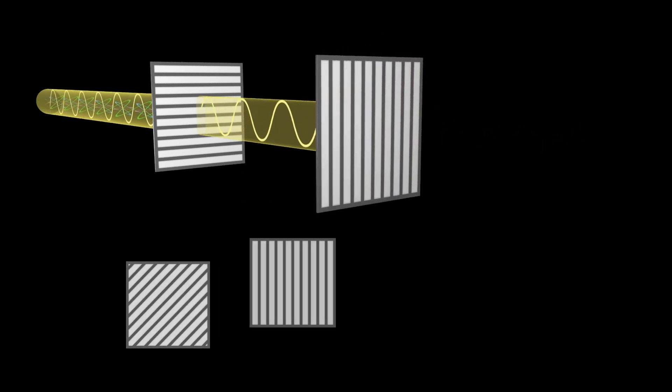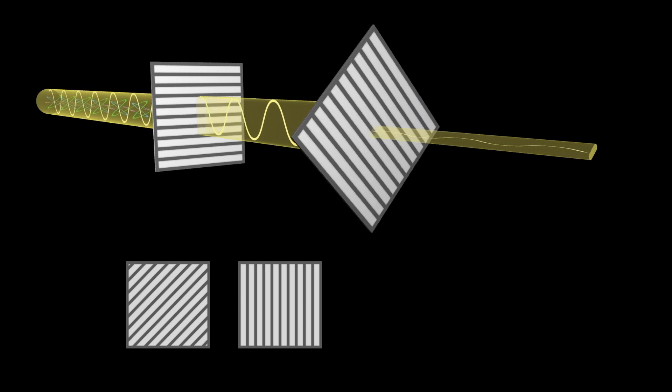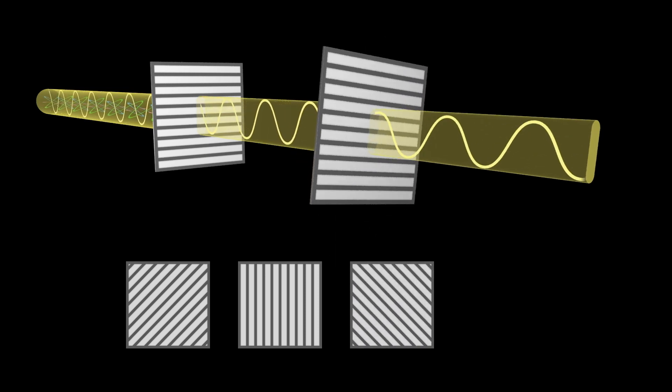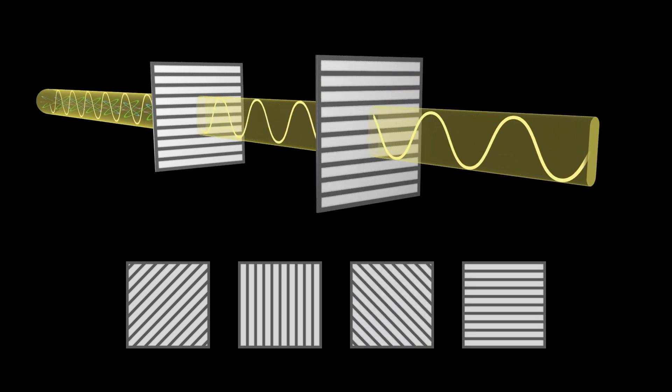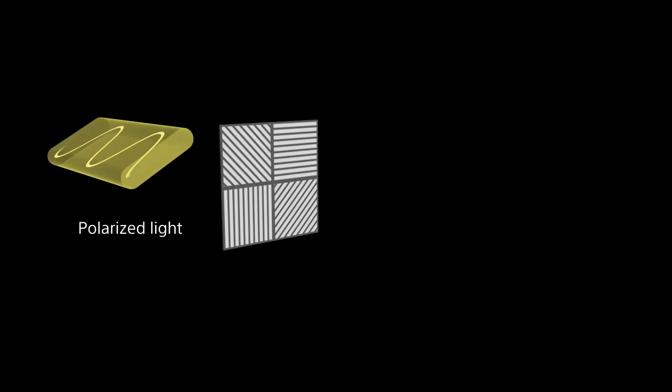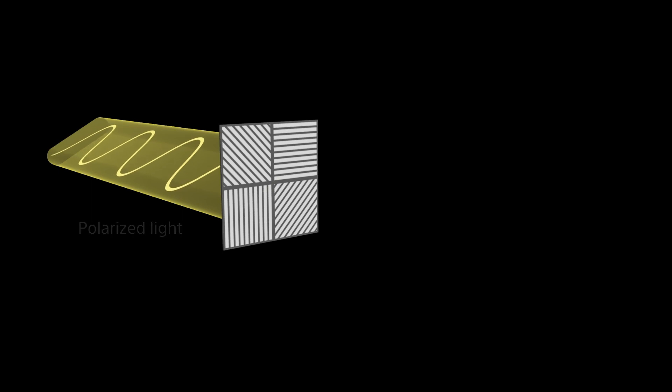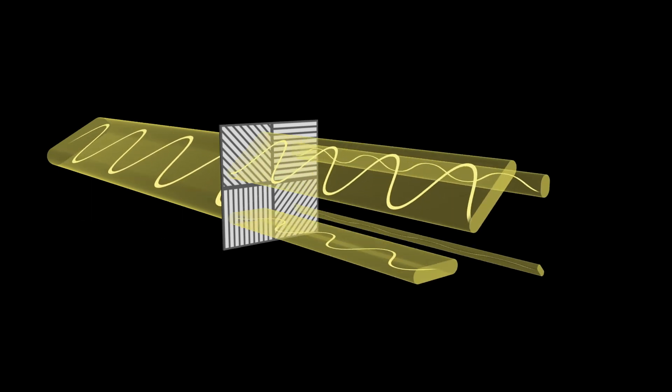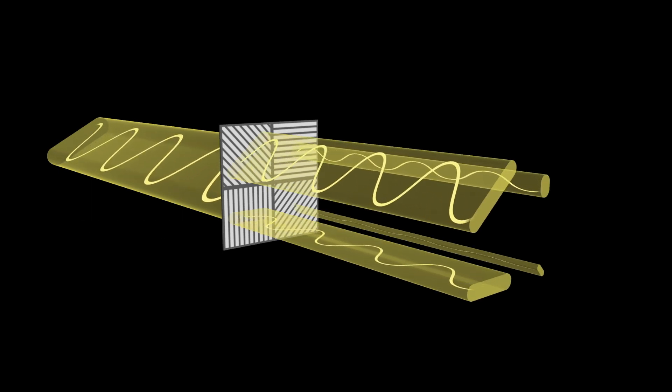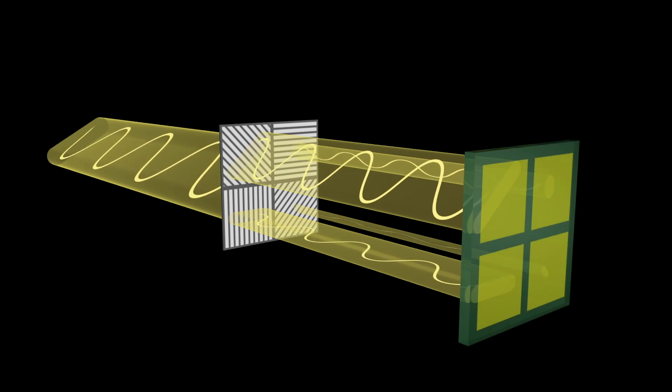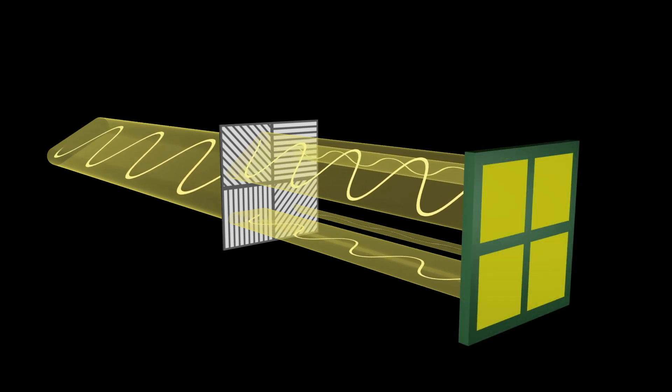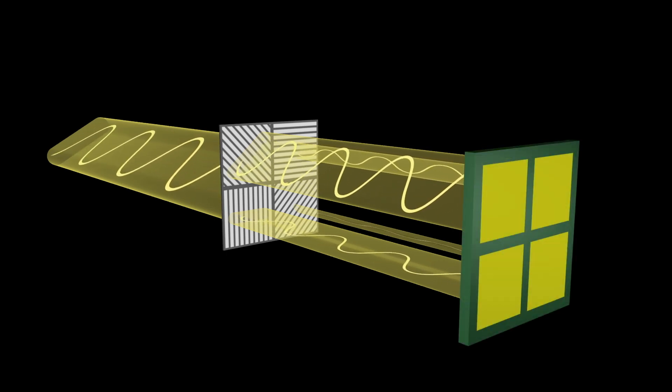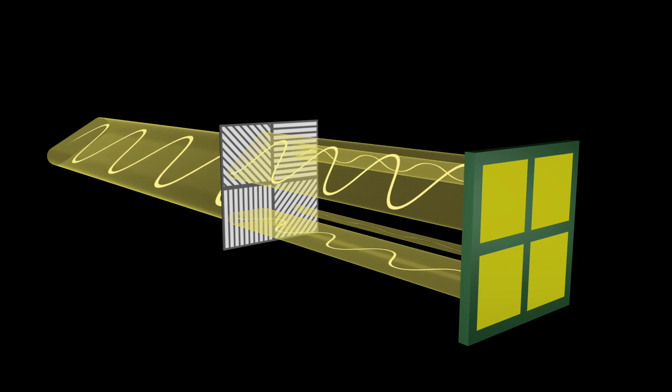PolarSense has multi-direction on-chip polariser. The intensity of the light through each polarised pixel is different. PolarSense can capture multi-directional polarised images in a single frame.